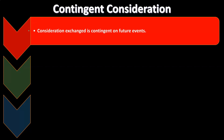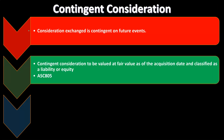Contingent consideration is consideration exchanged and contingent on future events. The consideration being given is contingent on some future event, which is of course unknown. Contingent consideration is to be valued at fair value as of the acquisition date and classified as a liability or equity. You can see this in ASC 805. This is somewhat consistent with accounting for contingencies in general.